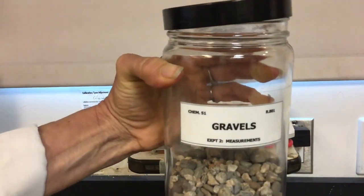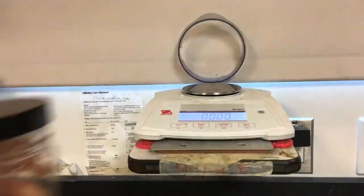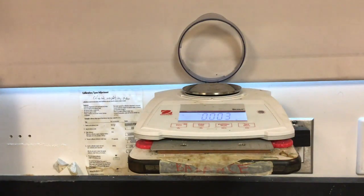Next we're going to measure the density of gravel. Gravel is an irregular shaped object, so we're going to need a new method to measure density.